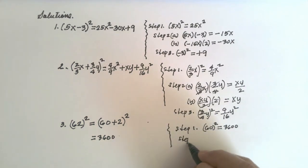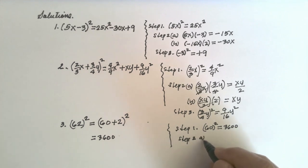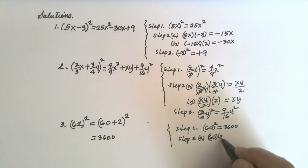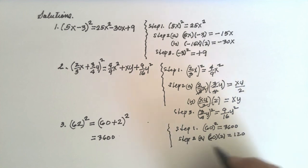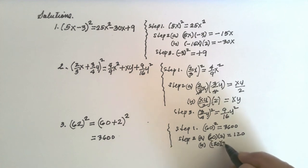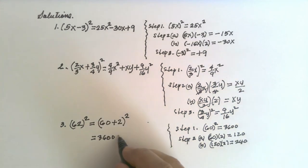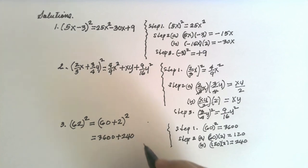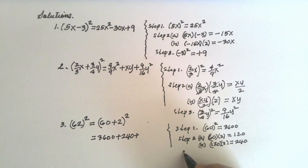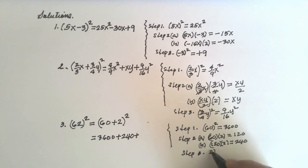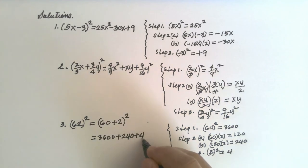Step number two, letter A: multiply the first term by the second — 60 times 2 equals 120. Letter B: multiply 120 by 2, giving 240. So we add plus 240. Step number three: square the second term — 2 squared equals 2 times 2, which is 4, so plus 4.